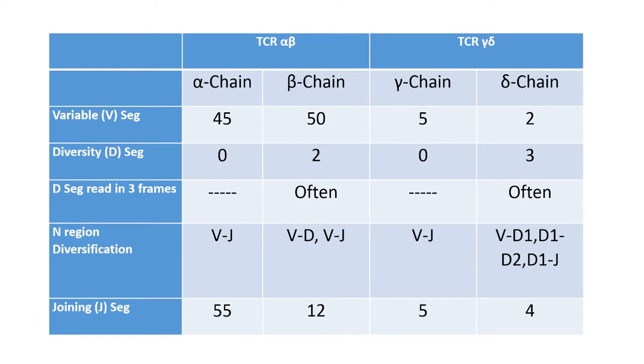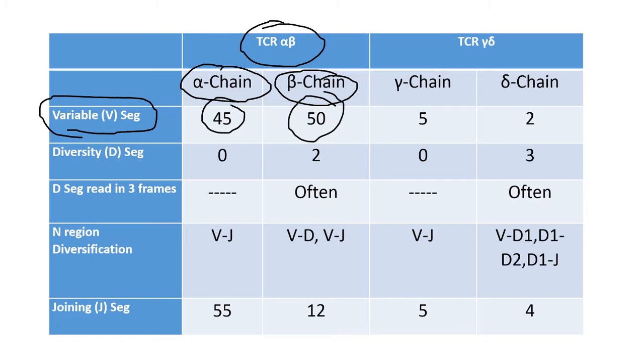So here's what we have. Let's take a look at the TCR, the alpha beta T cell receptor. We have our alpha chain and we have our beta chain. In our alpha chain, the variable segments, there are 45 of them in the alpha chain, 50 in the beta chain. The diversity segments, you have two of them in the beta chain. And in this diversity segment, can it read in three frames? Yes, it often does read in all three frames whenever it's making copies. Then, is there in-region diversification? How many joining segments are there, 55 and 12?